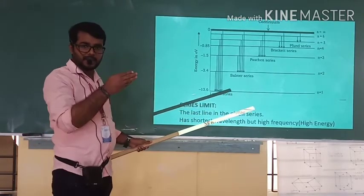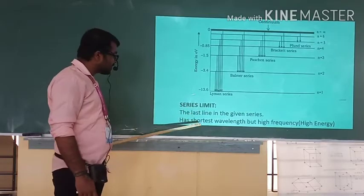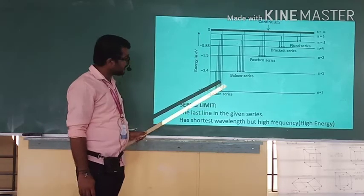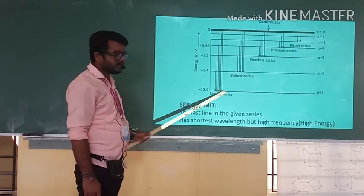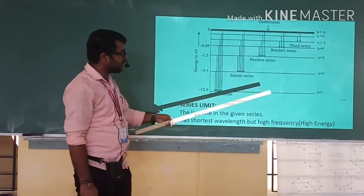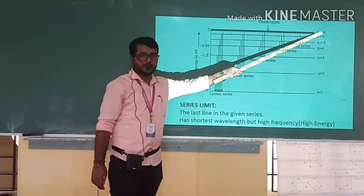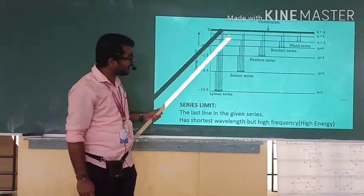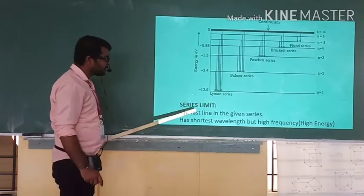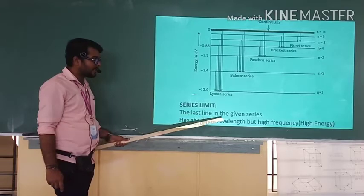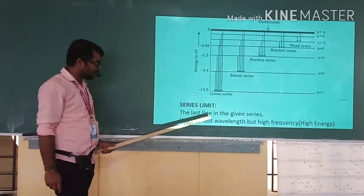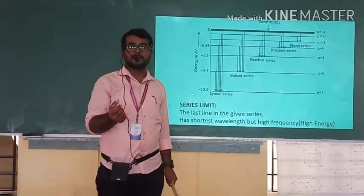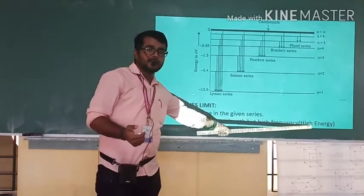The series limit is nothing but the last line within the given series. If you consider the Lyman series, the last line is the one where n1 = 1 and n2 = infinity. The line which originates from the transition from infinity to the ground state is called the series limit. The last line is called the series limit, and it has the shortest wavelength but high frequency.